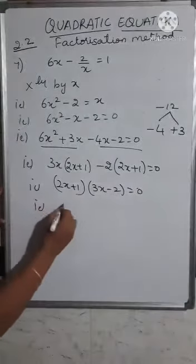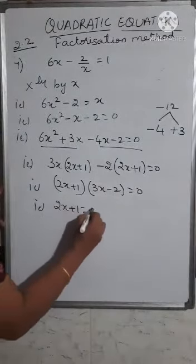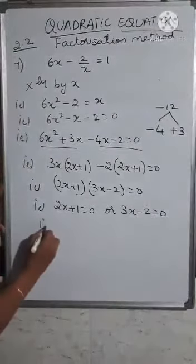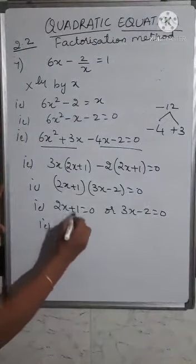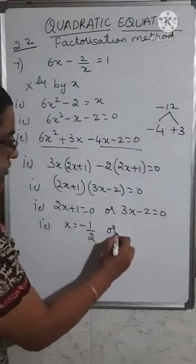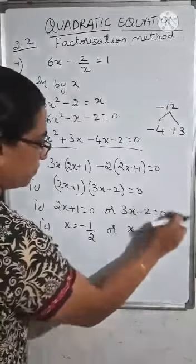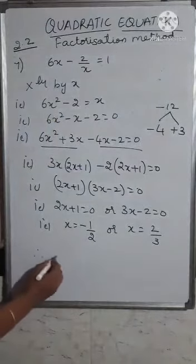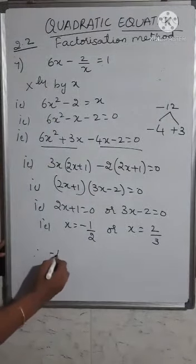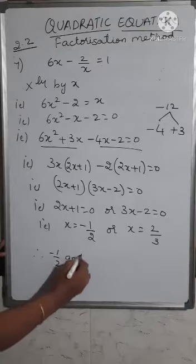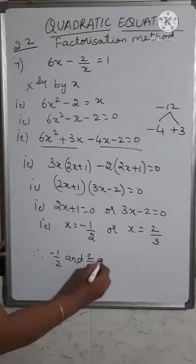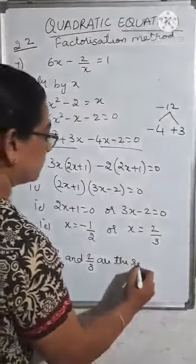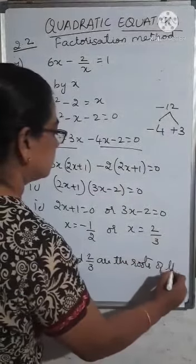From this, 2x + 1 = 0 or 3x - 2 = 0. So x = -1/2 or x = 2/3. Therefore -1/2 and 2/3 are the roots of the equation.